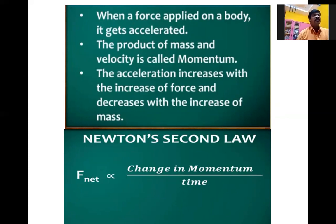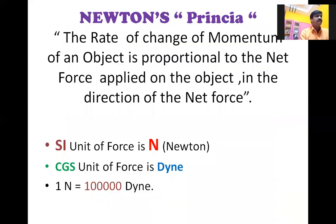These are all stated in Newton's second law. The net force F_net is directly proportional to the rate of change of momentum: F_net ∝ ΔP/Δt. The rate of change of momentum is known as force. Newton explained that the rate of change of momentum of an object is proportional to the net force applied on the object in the direction of the net force.